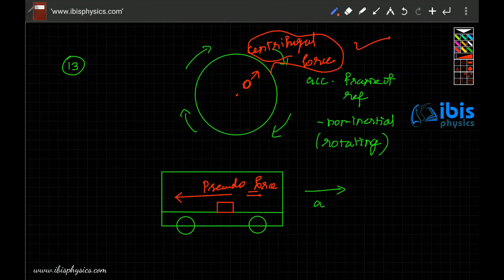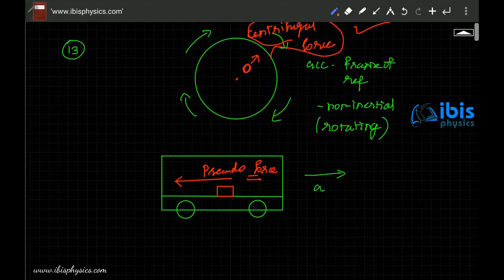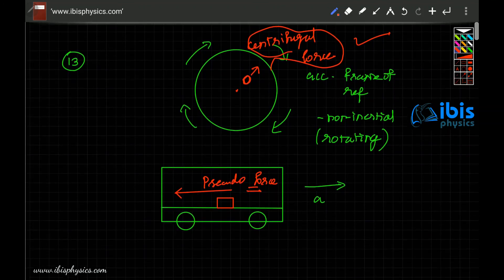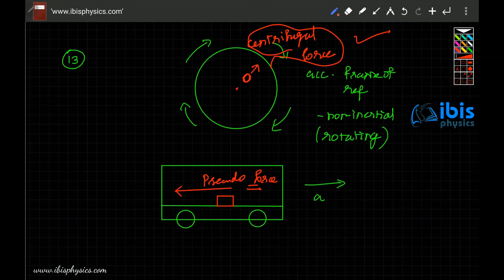The centrifugal force appears to exist in a rotating frame of reference, which is a non-inertial frame. The accelerating bus is also a non-inertial frame, but it is not a rotating frame. So centrifugal force appears to act only in rotating frames, while pseudo force appears to act in any kind of non-inertial frame. Both are non-inertial frames.